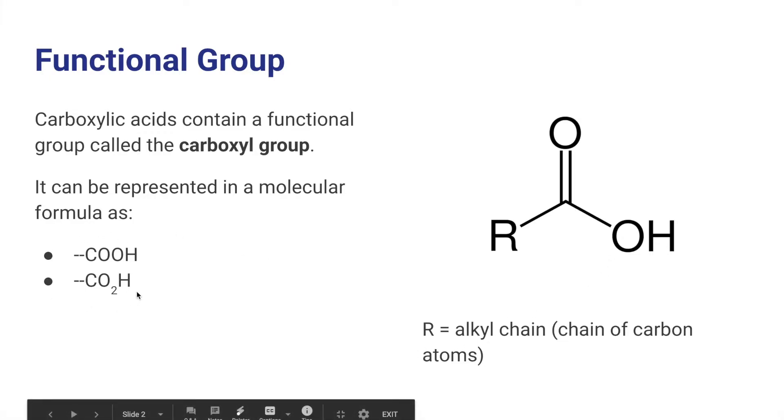Carboxyl groups can be represented using either of these two fashions if you see it written in a molecular formula. R just means any random chain of carbons of any length, just kind of a placeholder to mean a carbon chain. So the carboxyl group is a carbon with a double bond to an oxygen and then from the same carbon you have a hydroxyl group attached.